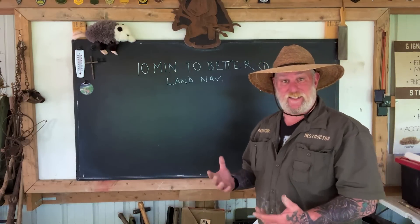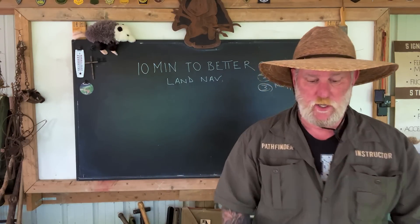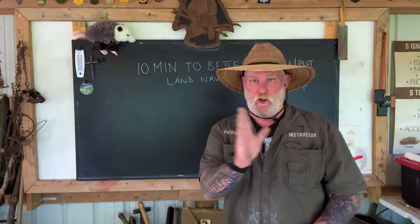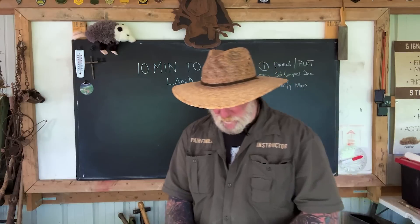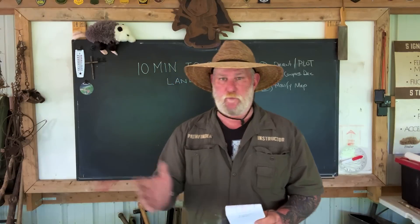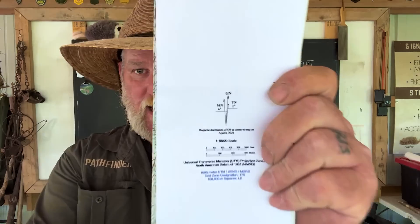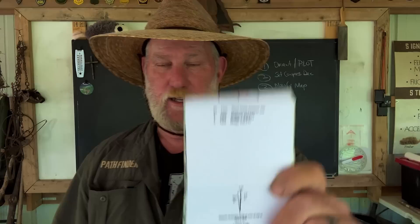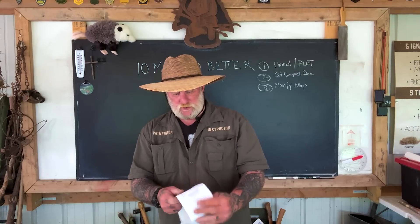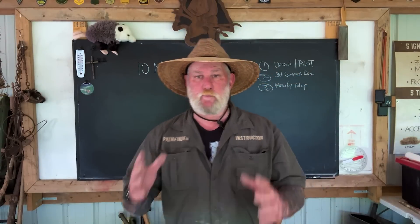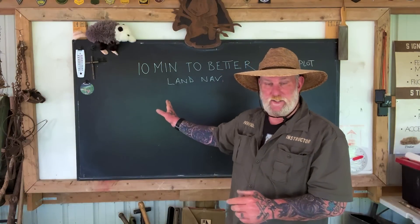Now that we have a simple explanation of what declination is — the angular difference between grid north and magnetic north — we need to understand where to find it, other than looking at the isogonic chart online. The first place you can find it is on the map that you're using, if you have an actual map and not a piece of a map. Every map is going to have a chart on it called the declination diagram. It's going to tell you what the difference is between grid north and magnetic north, and if it's easterly or westerly declination.